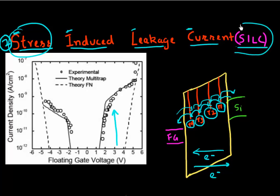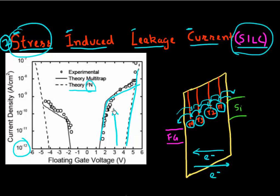Because of these trap states which build up due to cycling, instead of getting zero current, you now get a substantial current at low voltages across the dielectric. This is the stress-induced leakage current. From the Fowler-Nordheim or direct tunneling model, you would theoretically expect negligible current — less than a picoamp — but because of SILC, you get this significant tunneling current. This degrades cell performance: if you had a retention requirement of 10 years, charge can now leak out in less than a year.